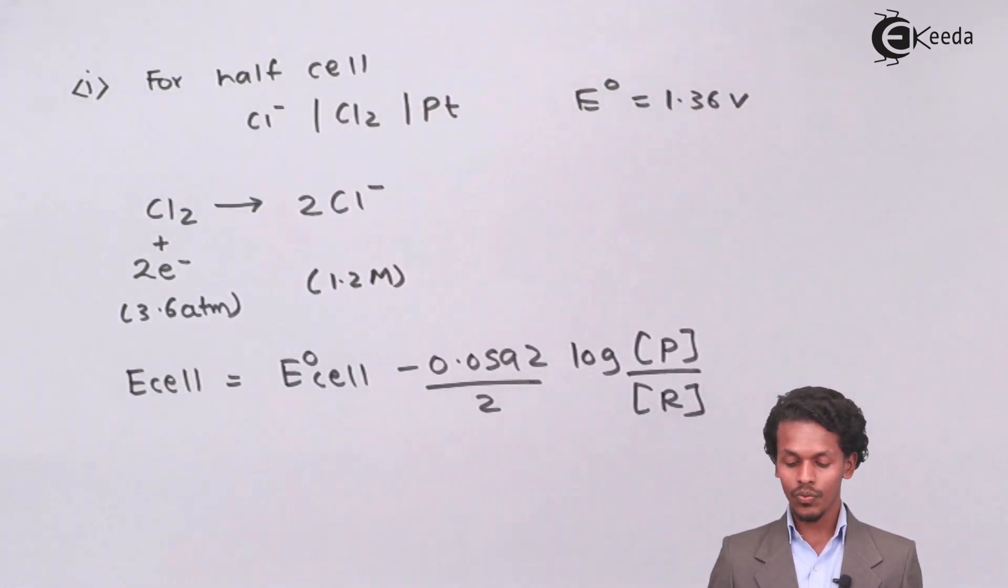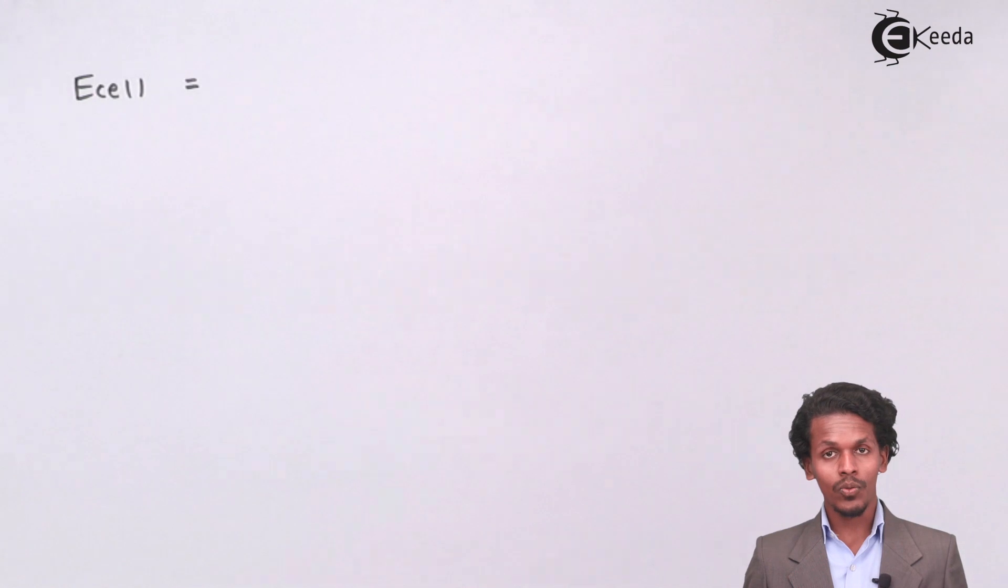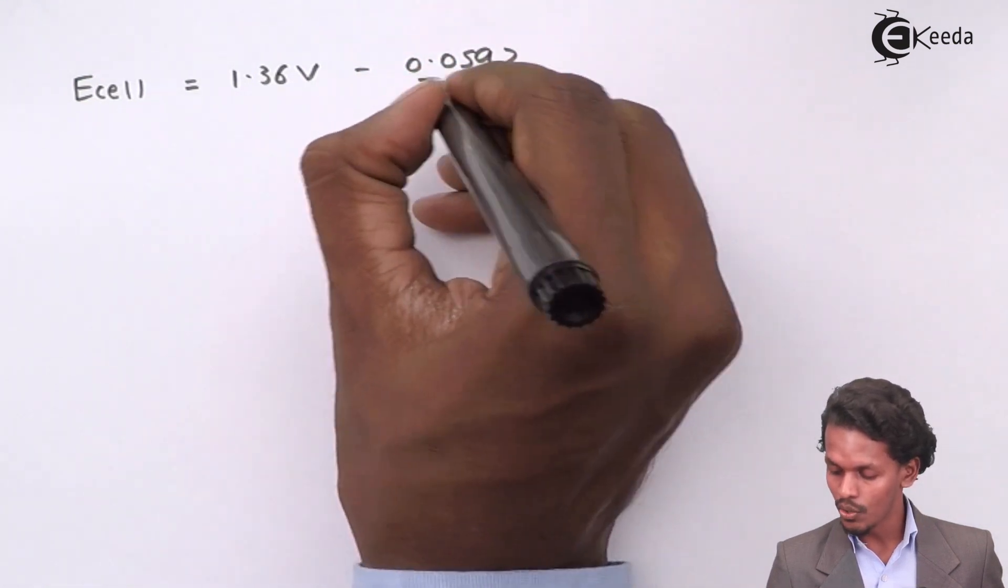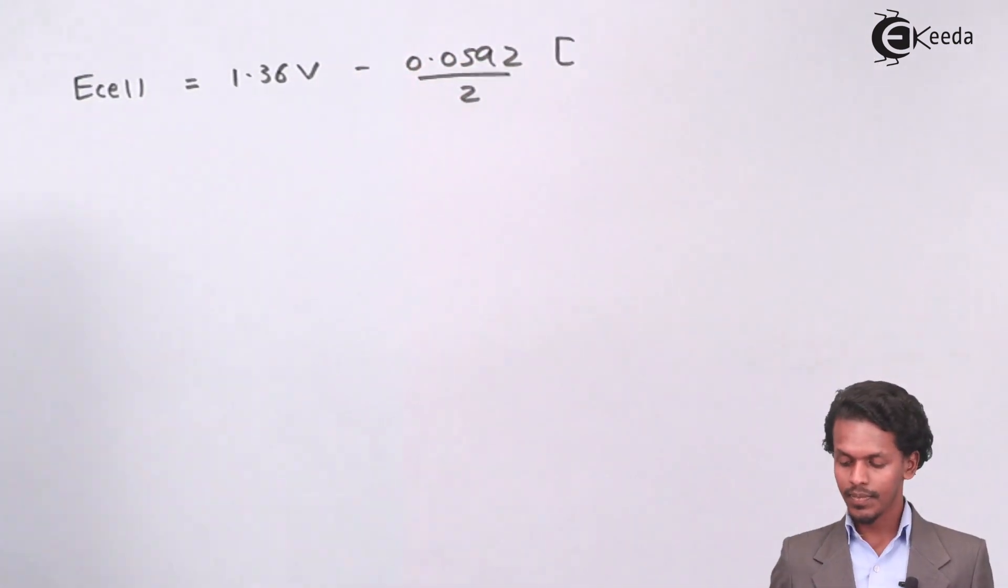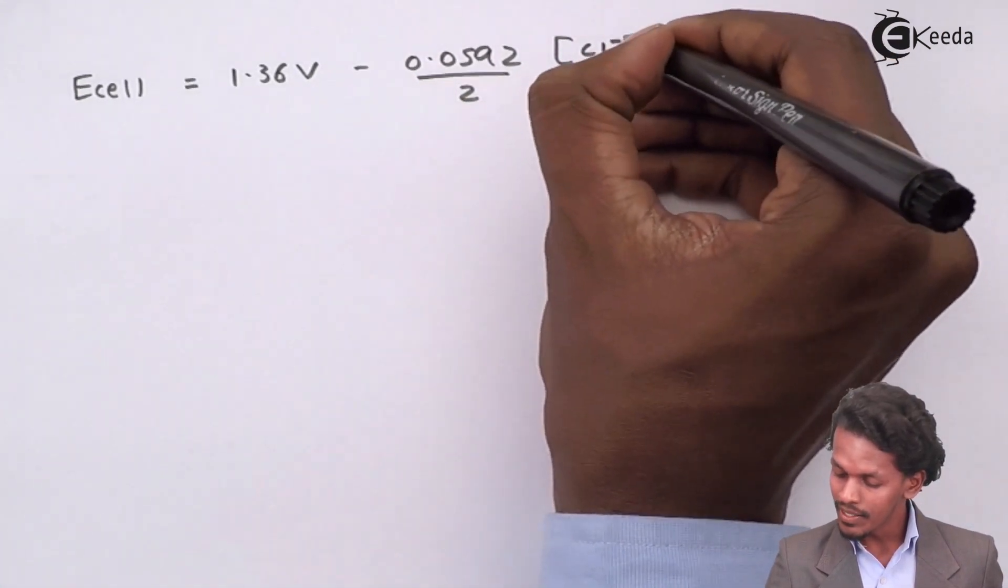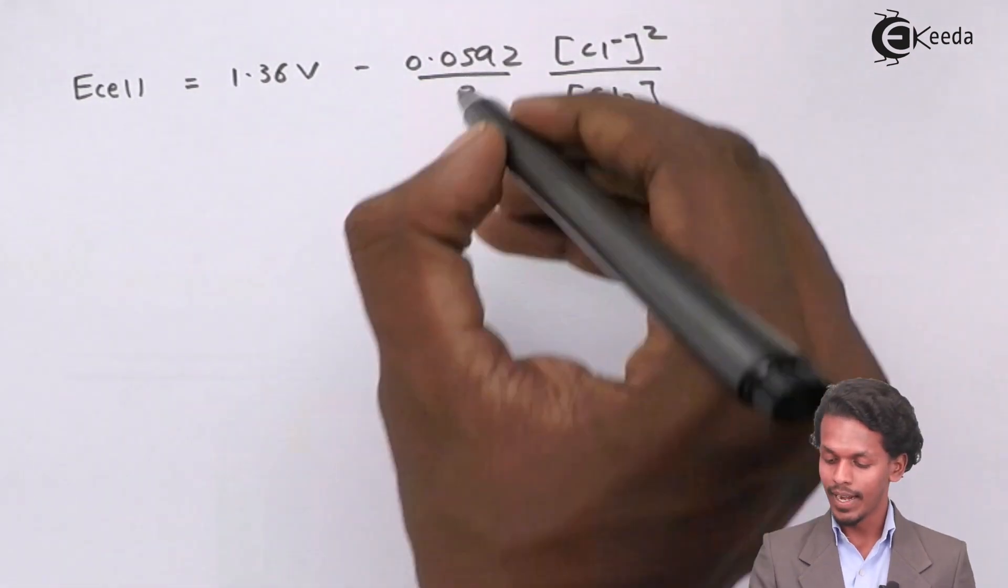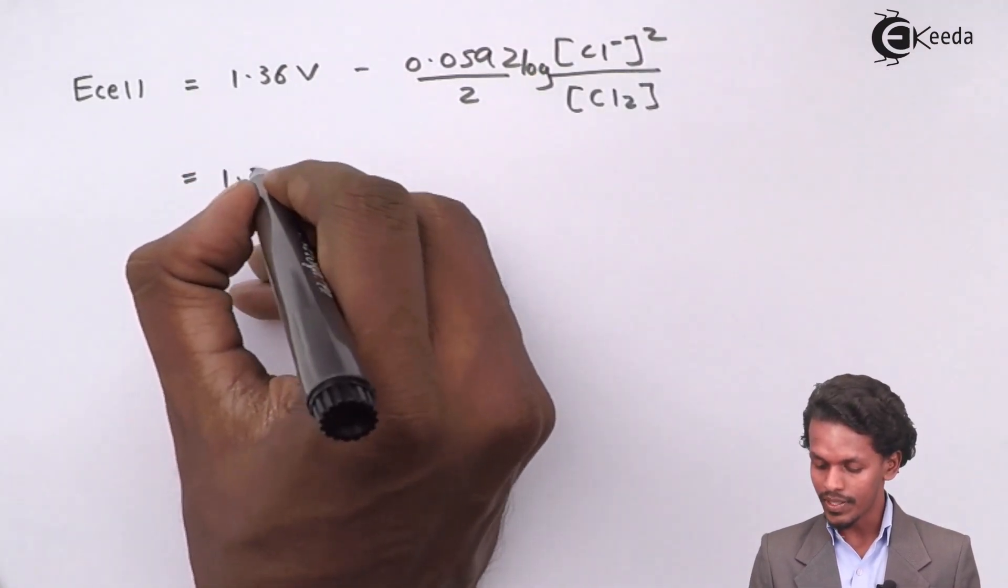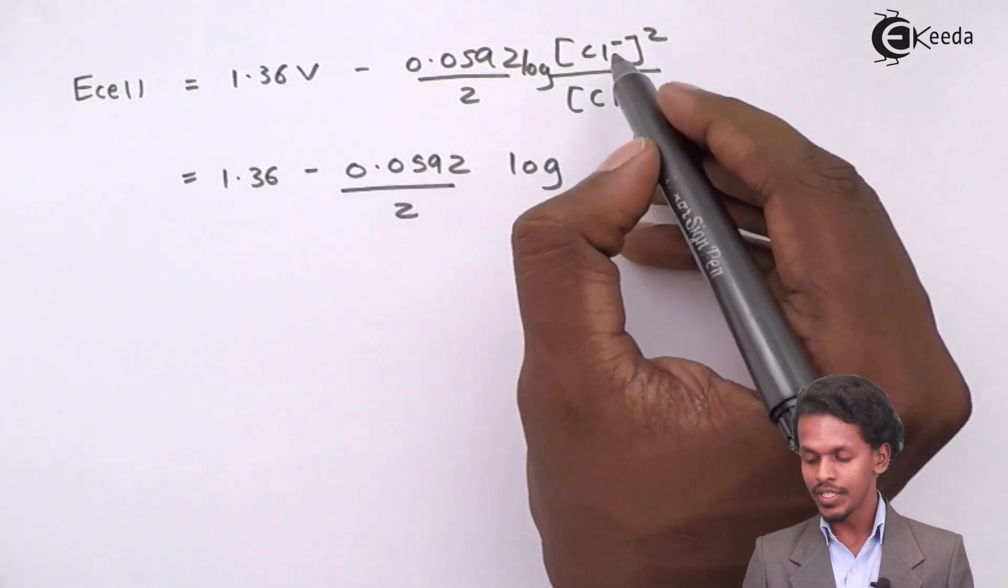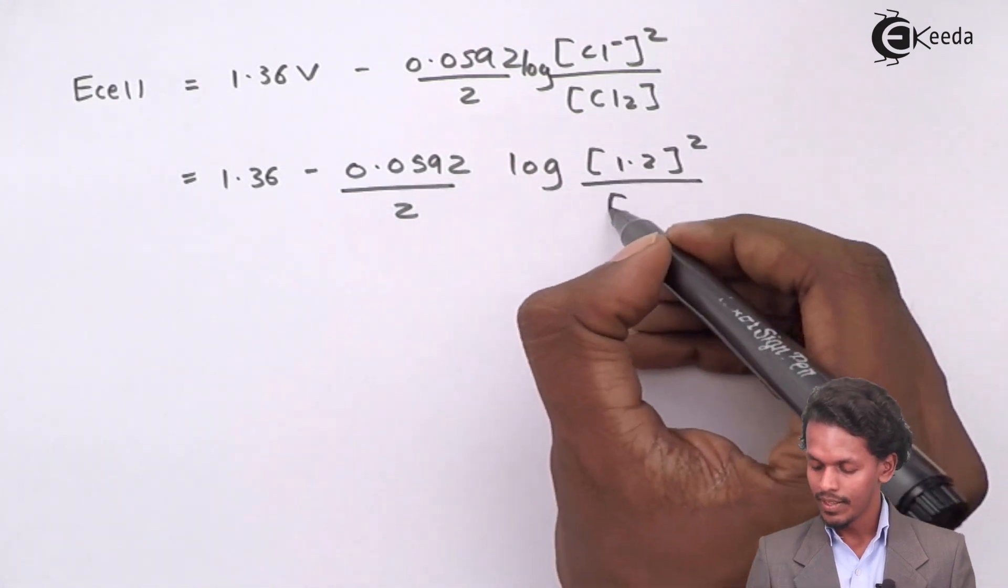So if we substitute the values, the E0 cell value is 1.36V minus 0.0592 divided by 2 and the product was 2 moles of Cl- so I could write it as Cl- raised to 2 divided by Cl2 molecule. So I could write it as 1.36 minus 0.0592 divided by 2 log of 1.2 raised to 2 divided by 3.6.